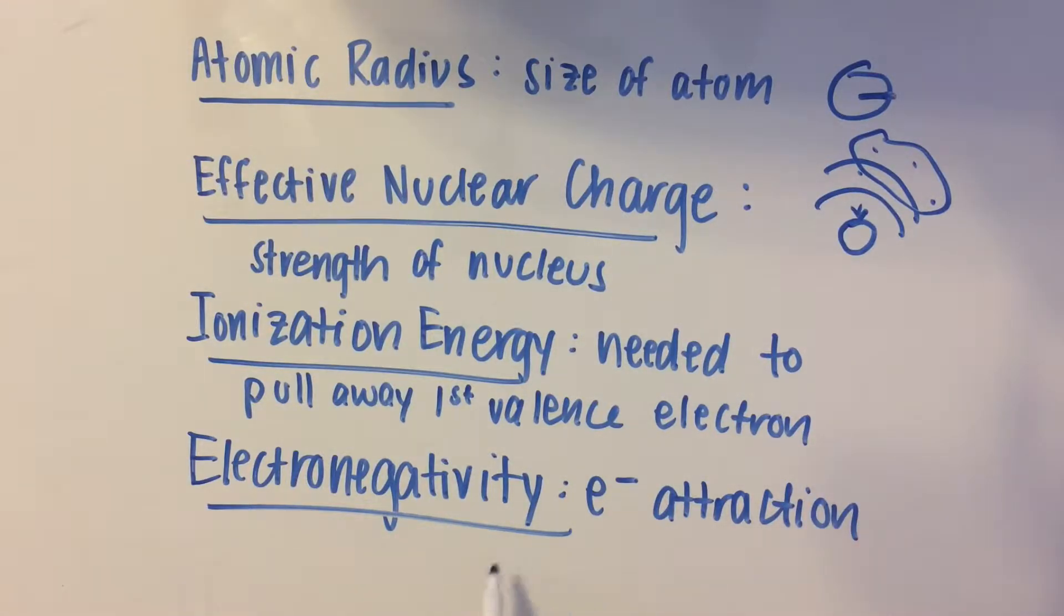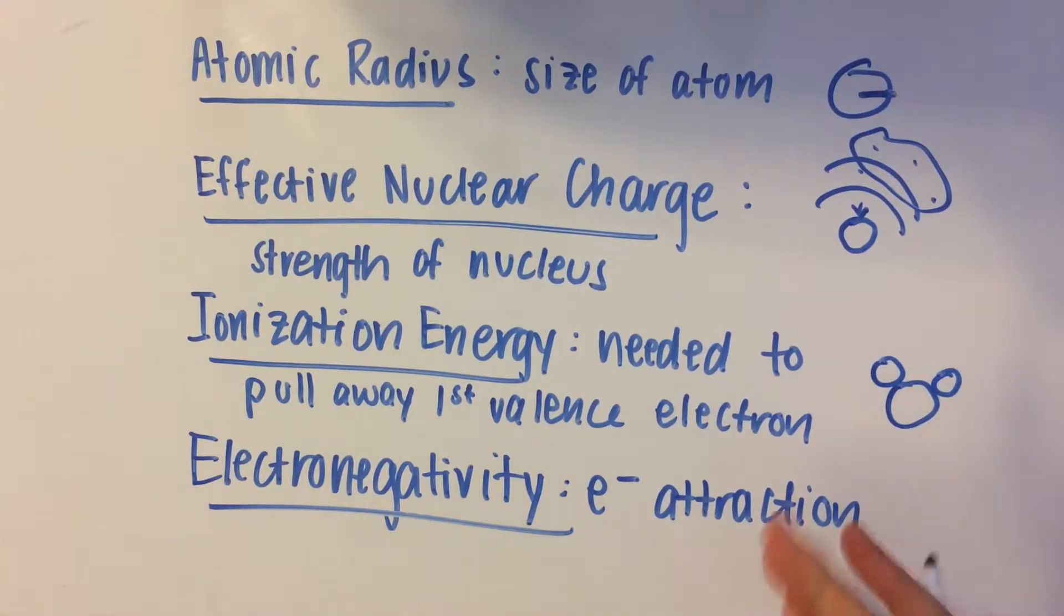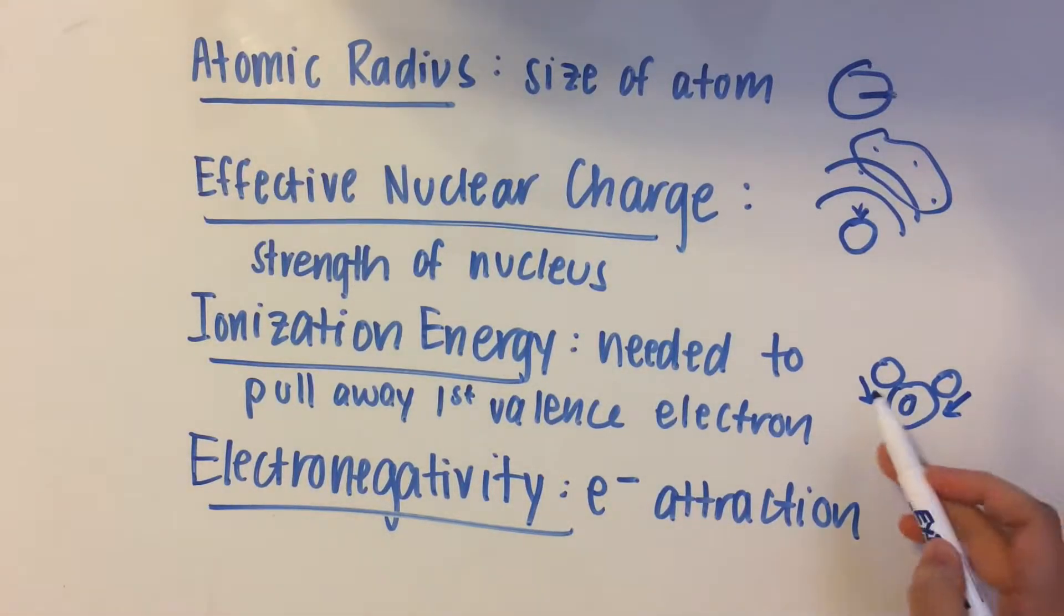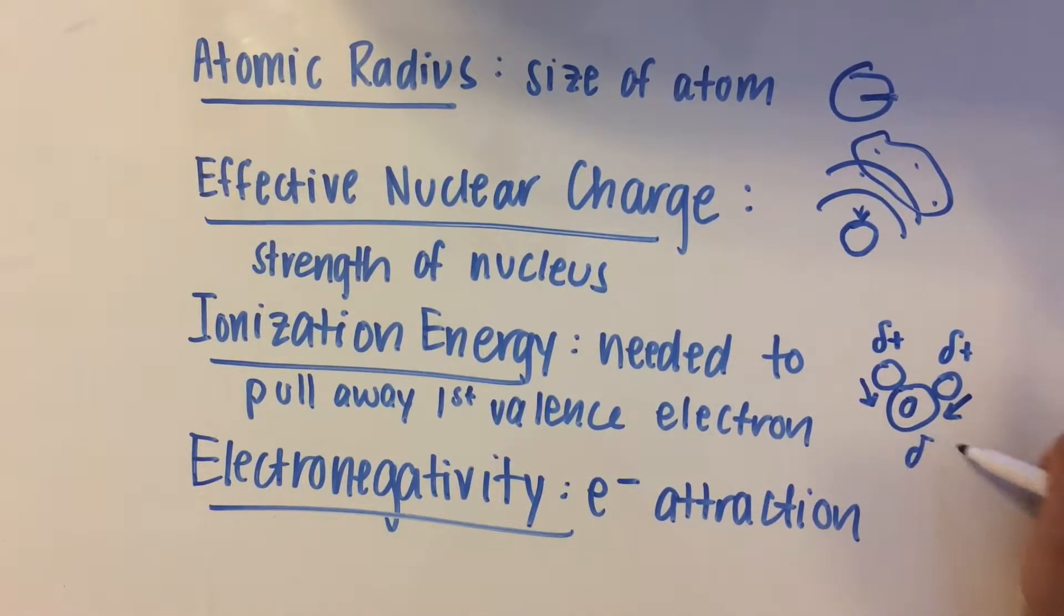So now electronegativity just really talks about how much the atom attracts electrons to itself. So if you've seen the water molecule before, and if you've looked at its properties, we say that oxygen is a really electronegative element, which means it pulls the electrons from the hydrogens to itself. And that's why hydrogen has a partial positive charge and oxygen usually has a partial negative charge.